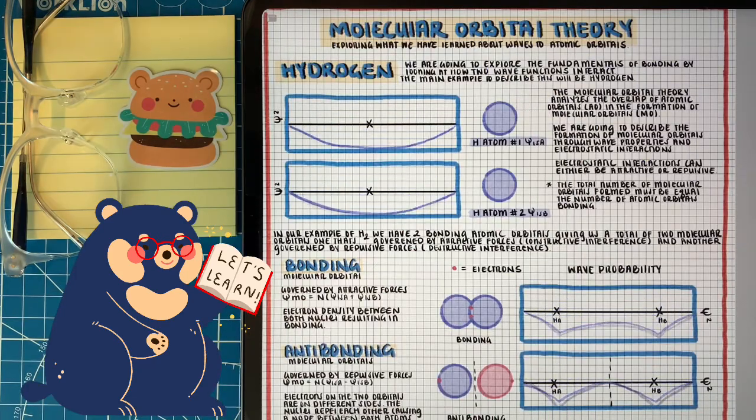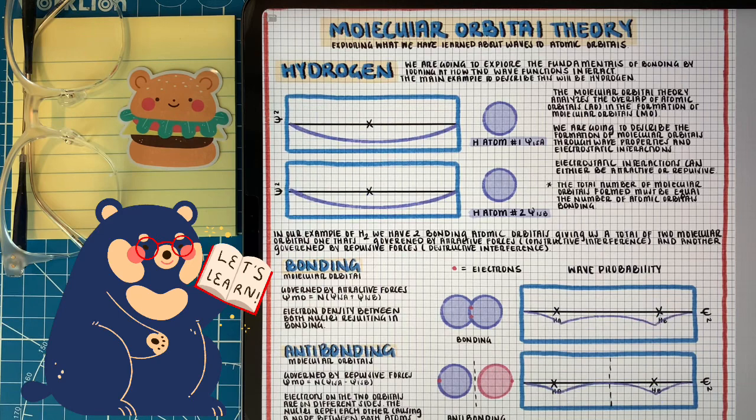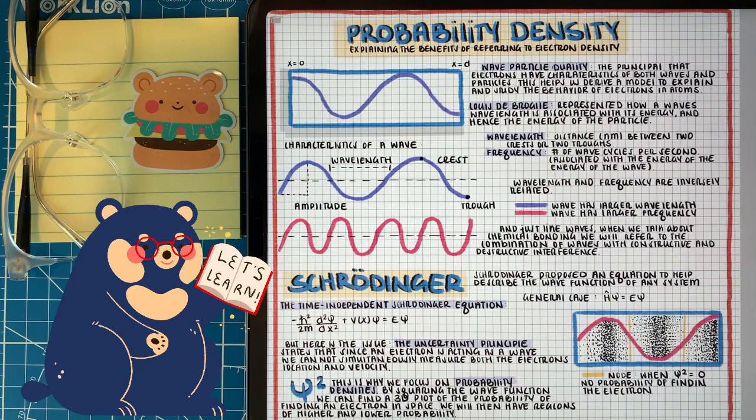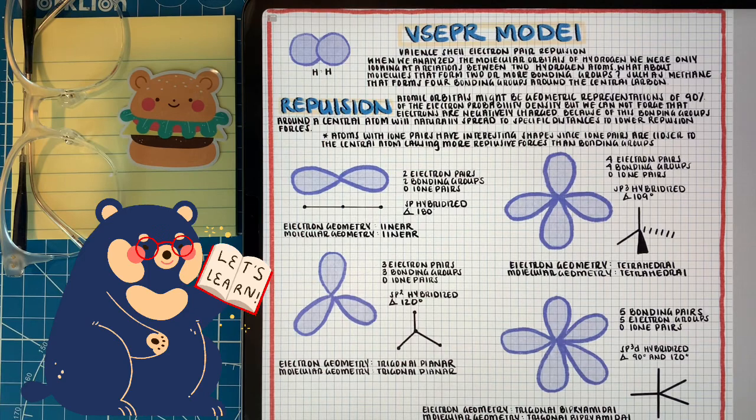Another point that we have to dive a little bit deeper into is that chemical bonding is a little bit more complicated than just constructive and destructive waves with bonding and anti-bonding. Electrons are negatively charged. So yes, we are talking about electron probabilities with atomic orbitals, but the electrons within these orbitals are negatively charged. So like the same side of two magnets, there's going to be some repulsion.